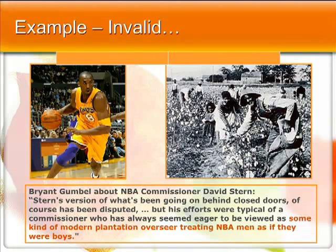An example of an analogy that does not work is when Bryant Gumbel compared treatment of NBA players to slaves. Slaves paid nothing, lived in poverty, they were beaten or killed at will by owners, their families were split apart, their children sold, and they were treated with contempt in society. NBA players — the lowest paid in 2011-12 was $490,180 a year, and the highest paid was $25,244,000 a year. They live in luxury, they are often protected from consequences of bad behavior, and they are treated with deference and admiration in society. It would be virtually impossible to make a valid comparison between the lives and situations of NBA players and slaves.